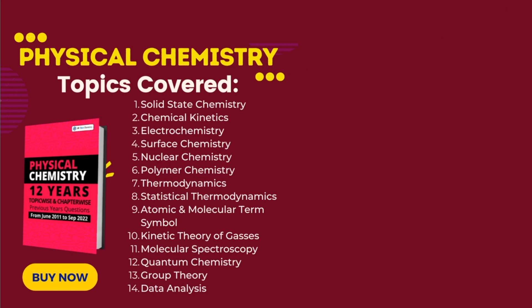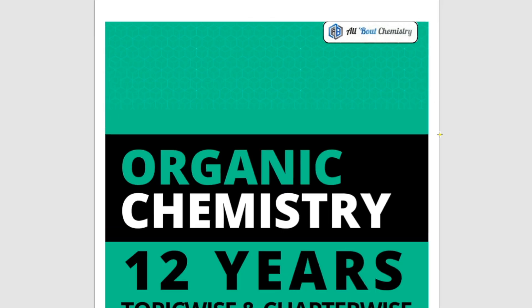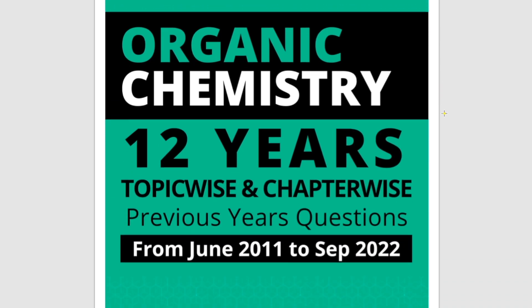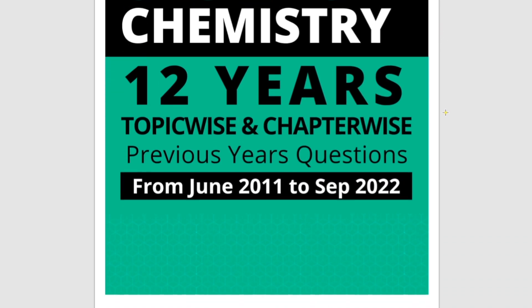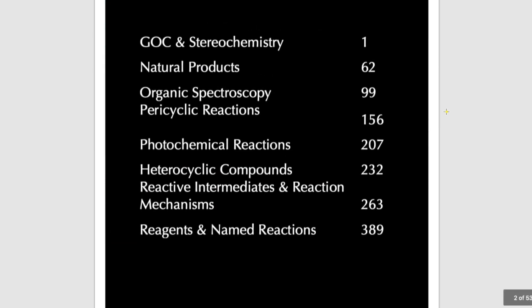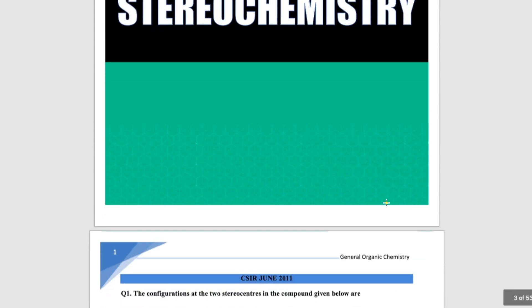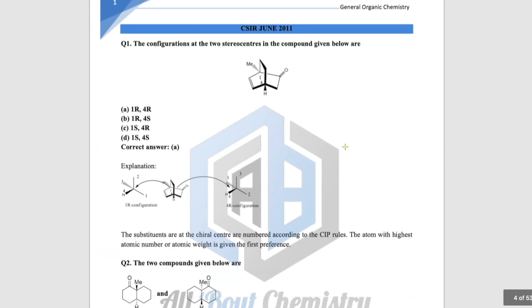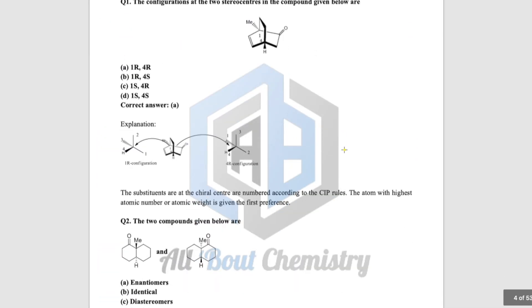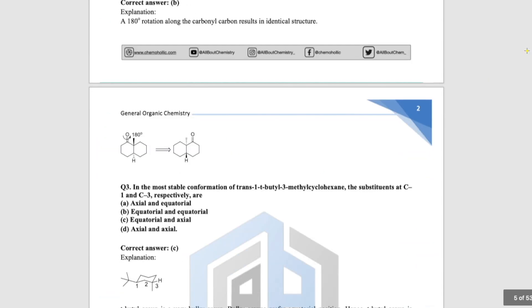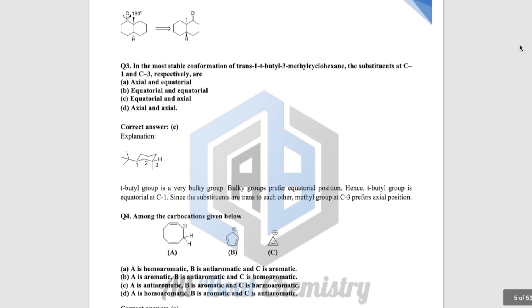Let's start with the organic chemistry ebook. This is the ebook file you will be able to download once you make the payment. As you can see, the contents page shows which topic starts on which page. The first topic is GOC and Stereochemistry, and all questions are there along with their solutions.